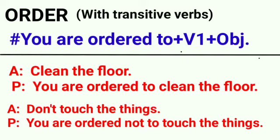कुछ और order वाले sentences देखिए जिसमें transitive verbs हो। Structure रहेगा: 'you are ordered', फिर verb का first form, फिर object और बाकी part। पहला example: 'clean the floor' — passive: 'you are ordered to clean the floor'. Next: 'don't touch the things' — यहां negative sentence है — passive: 'you are ordered not to touch the things'. इस तरह order वाले cases बनाते हैं। Beginning में 'you are ordered' लगा देना है, बाकी सारे parts almost same रहेंगे। Verb का form change नहीं होता, verb हमेशा first form में ही रहेगा।